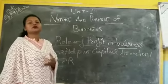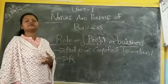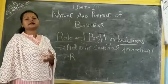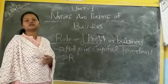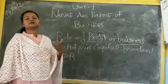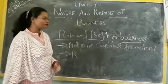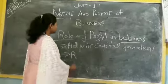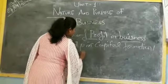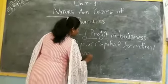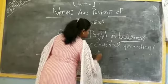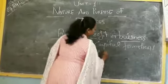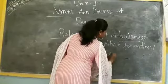All this — you have to be given some returns, some salary, some wages, some interest. So, return on factor of production.